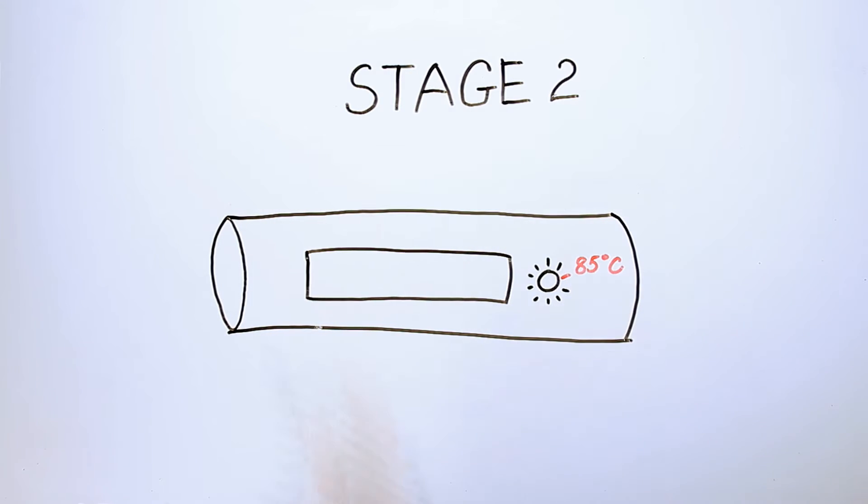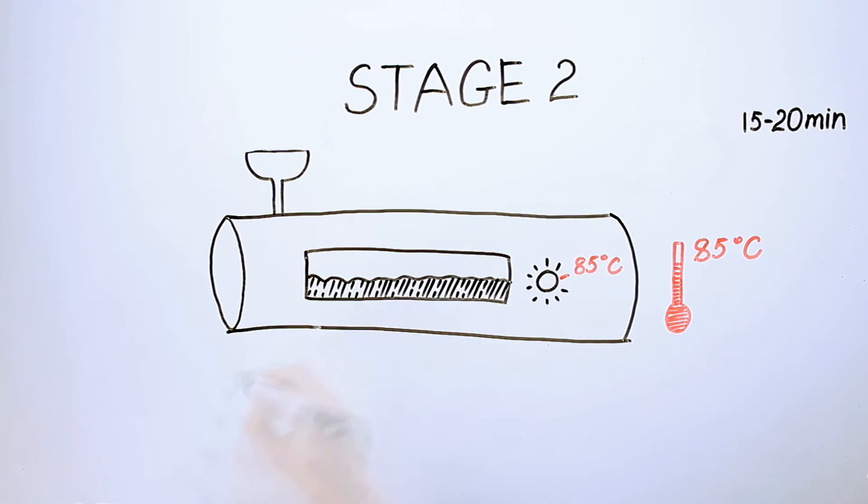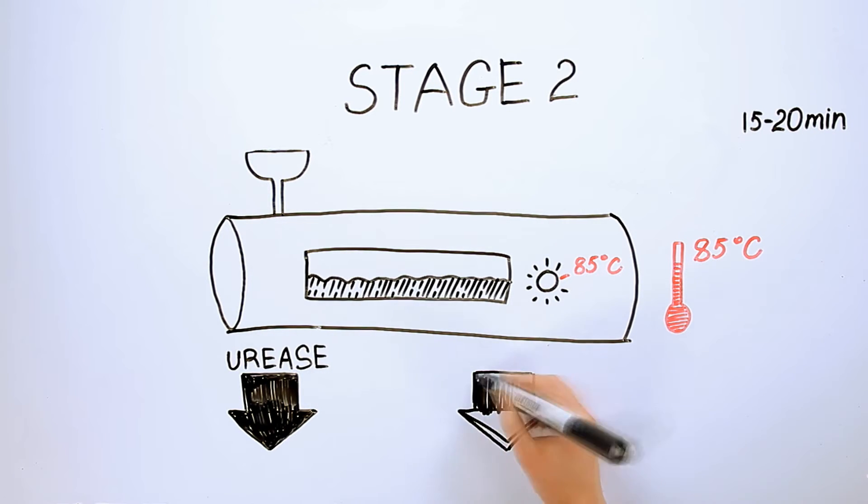Stage 2: The moist substance is moved to the toaster. The process starts by heating the raw product at a temperature of 80 to 85 degrees Celsius for a duration of 15 to 20 minutes. This is done to denature the urease which is present in the feed and also to eradicate pathogens.